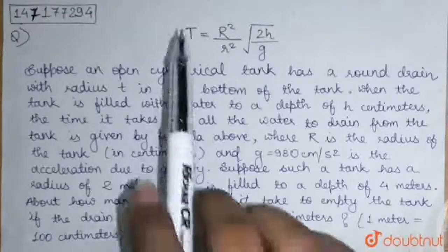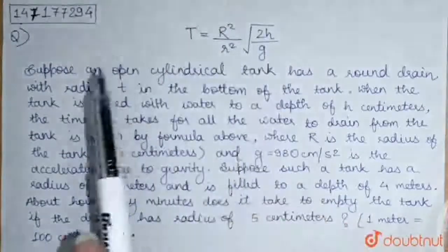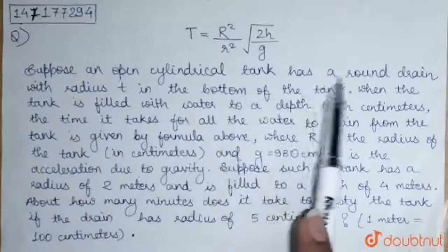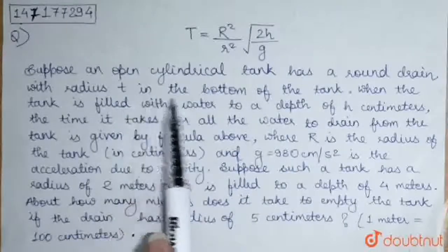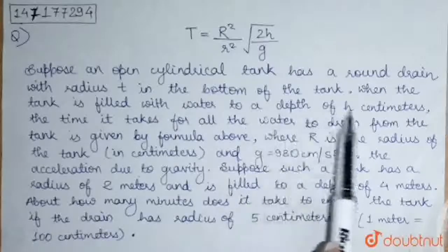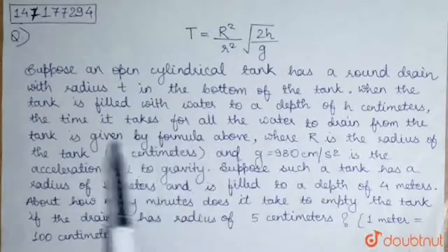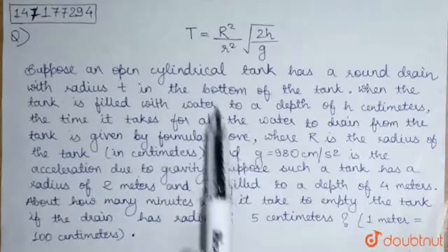The question is: t equals R squared upon r squared, under root 2h upon g. Suppose an open cylindrical tank has a round drain with radius r in the bottom of the tank. When the tank is filled with water to a depth of h centimeters, the time it takes for all the water to drain from the tank is given by the formula above.